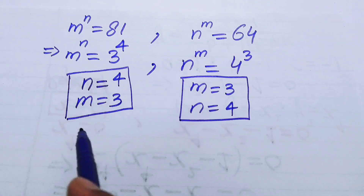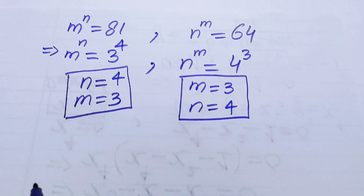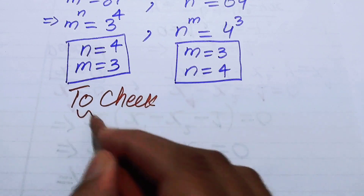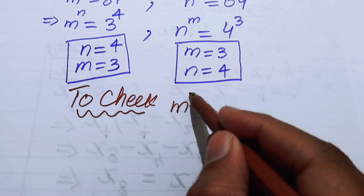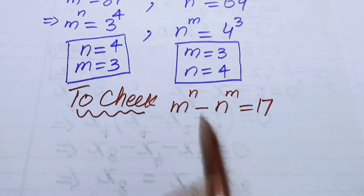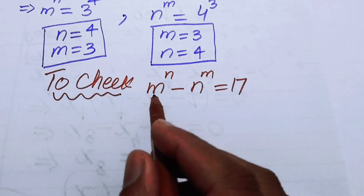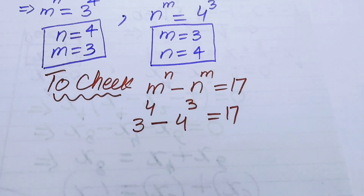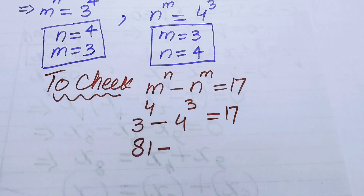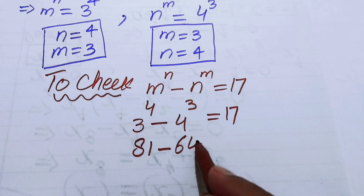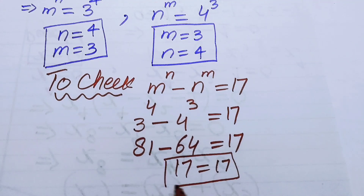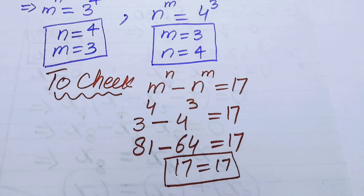Since m and n give the same values from both cases, this is our final answer. We verify: substituting m equals 3 and n equals 4 into the original equation, 3 to the power of 4 minus 4 to the power of 3 equals 81 minus 64 equals 17, which confirms that m equals 3 and n equals 4 satisfies the given equation.